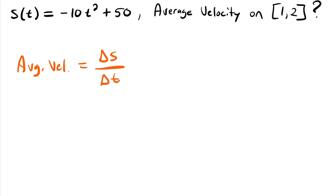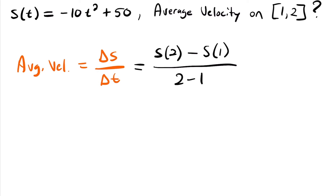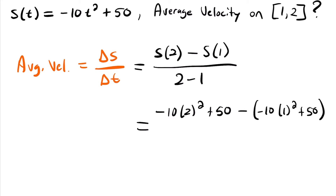We plug in the endpoints of our time interval into the position function to find the position at each time and subtract to find the change in position, then divide by the difference of our time interval endpoints. Starting with time equals 2 and subtracting time equals 1: we get negative 10 times 2 squared plus 50, minus negative 10 times 1 squared plus 50, all over 2 minus 1. Simplifying: negative 40 plus 50 minus negative 10 plus 50, all over 1.